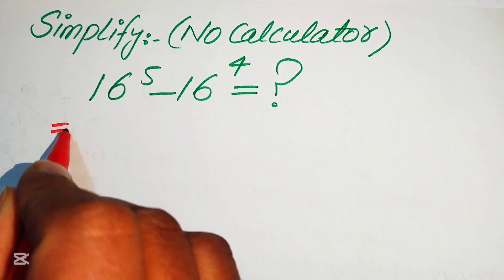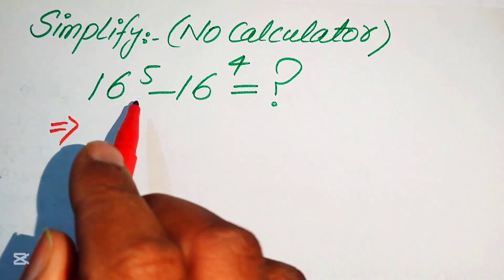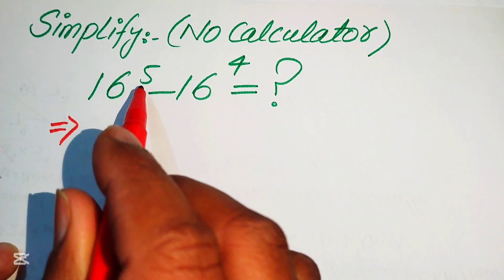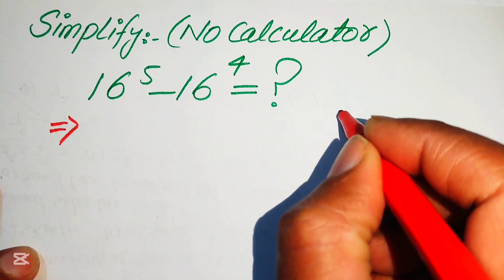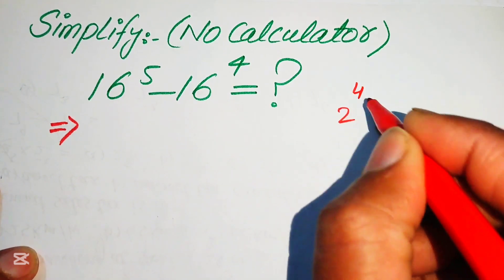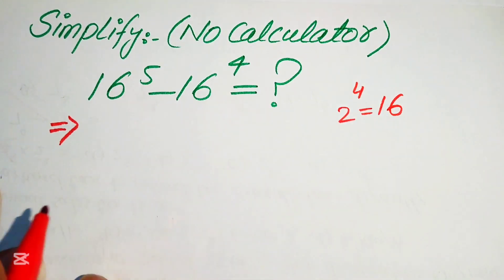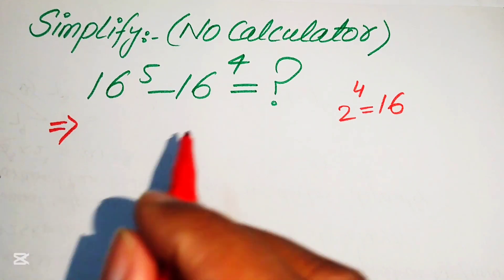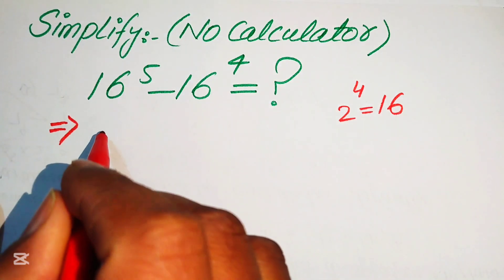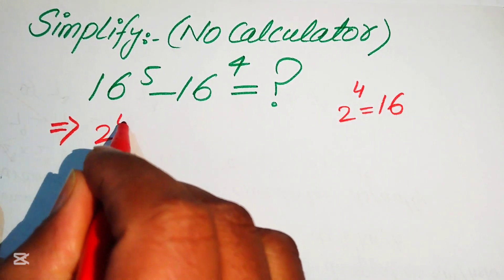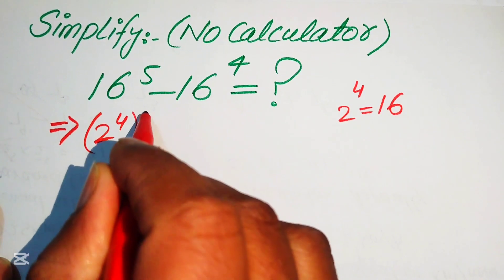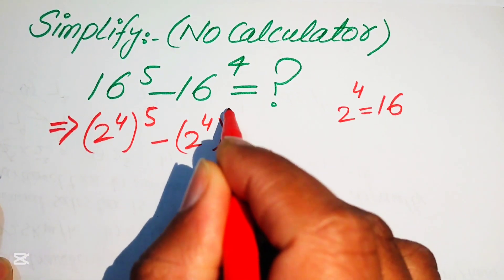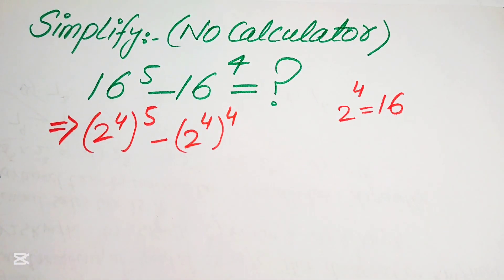The very first step is to rewrite the left hand side. We know that 2 to the power of 4 equals 16, so we replace both 16s with 2 to the power of 4. It will be written as 2 to the power of 4 raised to the power of 5, minus 2 to the power of 4 raised to the power of 4.